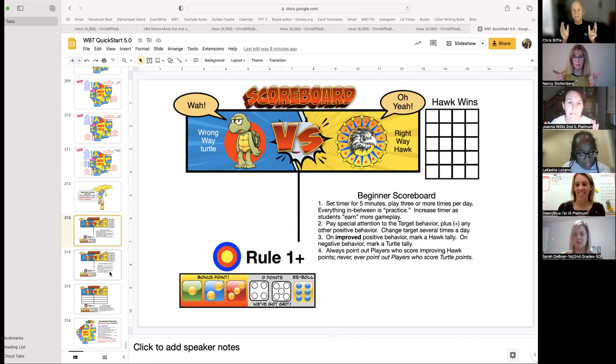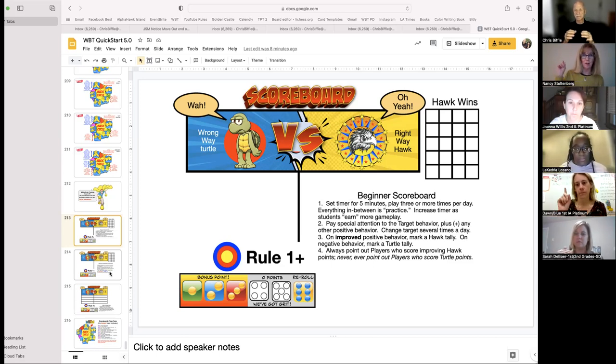Thank you, Coach. Okay, this is beginner scoreboard. So you're going to set your timer for five minutes. That's how long the game's going to last. Why do we do that? Because we want to make sure we're doing it. So with five minutes, it's right there. And in between, it's all practice. You've got a target behavior on there. You see improvement in that. You're going to make a note of that by going, I'm a hawk. And then they'll go, oh yeah, as you mark that scoreboard. You see some stuff you don't like, don't look over there. Make it vague. We've got some people over here not using big gestures, turtle. And they go, wah.